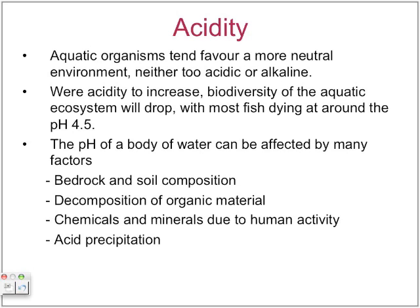Acidity: aquatic organisms want a more neutral environment, which is not too acidic or alkaline. If acidity were to increase, biodiversity would drop, and most organisms die around a pH of 4.5. The pH of aquatic ecosystems can be affected by a lot of factors, like bedrock and soil composition, decomposition of organic material, chemicals and minerals, and acidic precipitation.